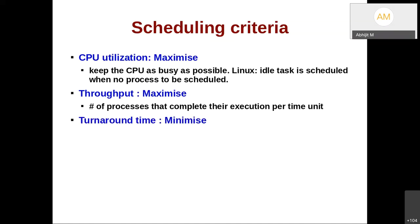The third criterion is turnaround time — the time for a process to complete — which should be minimized. You cannot minimize it below the minimum time the program itself needs to execute. What you try to do is avoid the extra time spent executing other processes in between. These requirements are actually conflicting with each other. If you try to minimize turnaround time for a CPU-intensive process, the best way is to disable interrupts and let it run until it is over. But then your throughput goes down because many small processes that could have completed in that period never got scheduled.